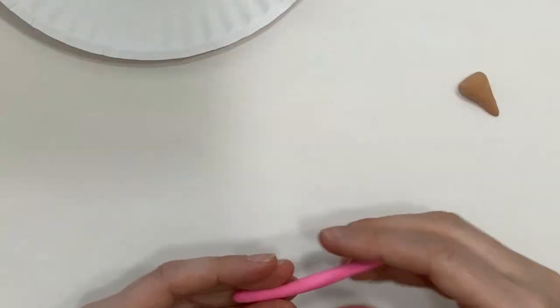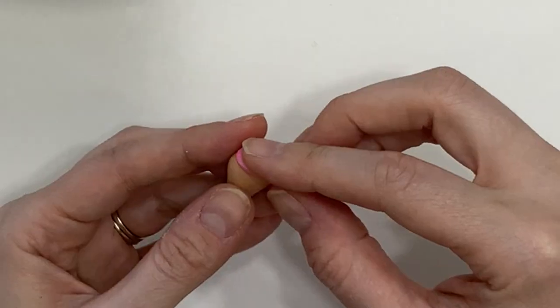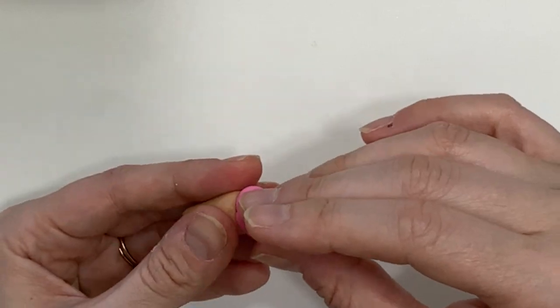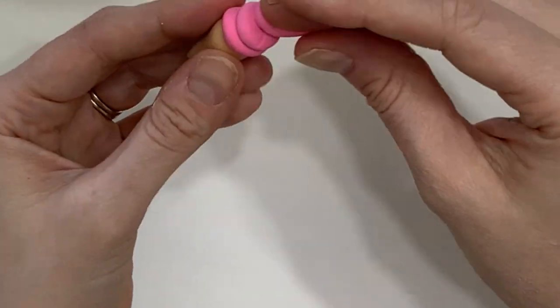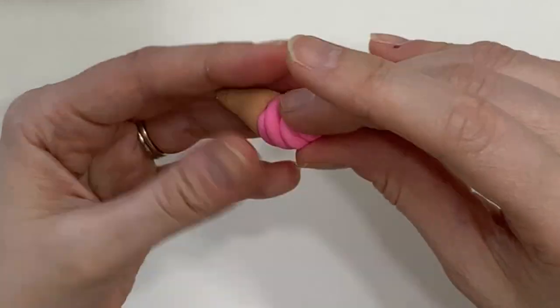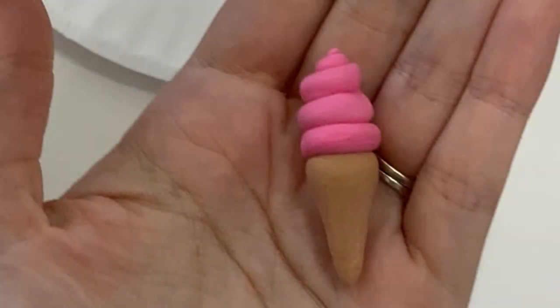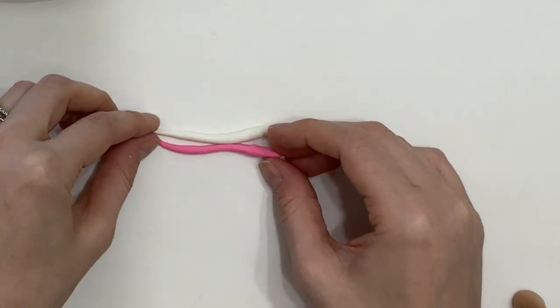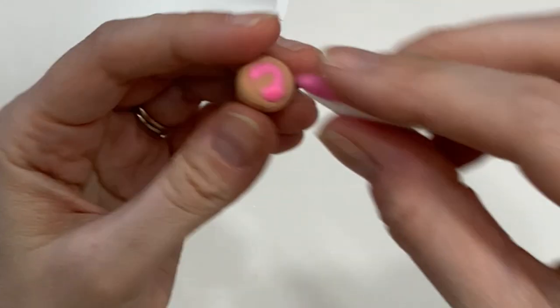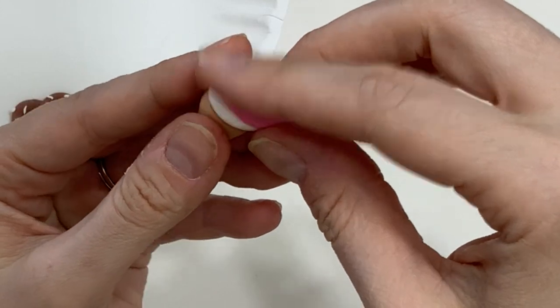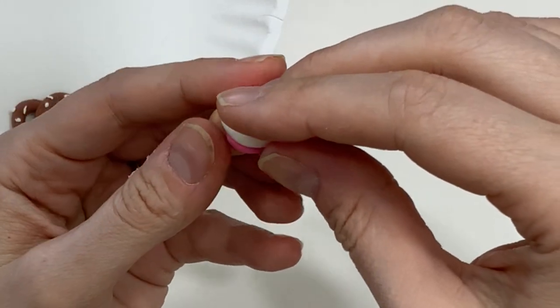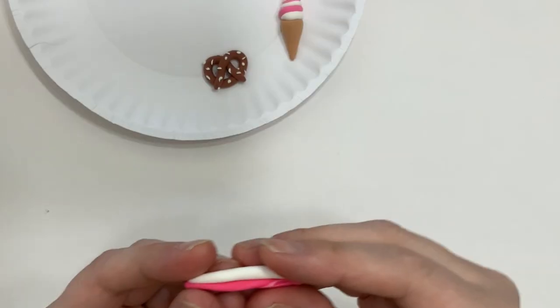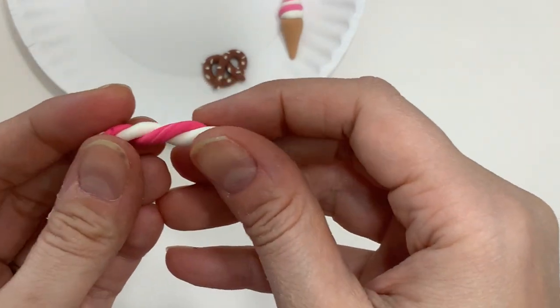And since we already have a cone, let me show you how to use a coil to make the swirly ice cream. Now if you're anything like me, you might enjoy two flavors like vanilla and strawberry.